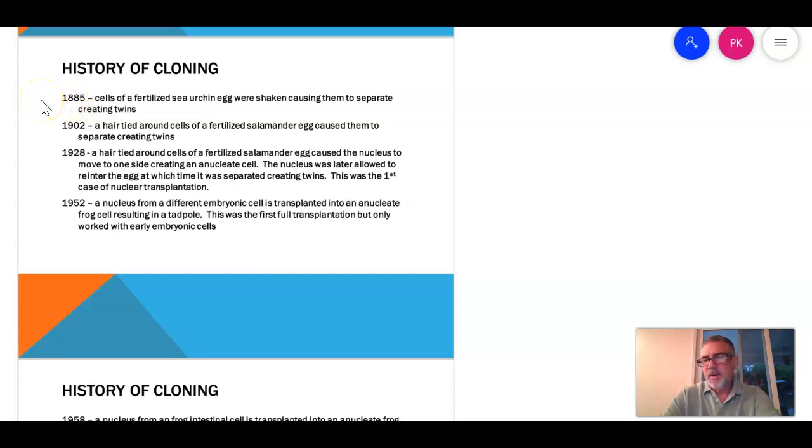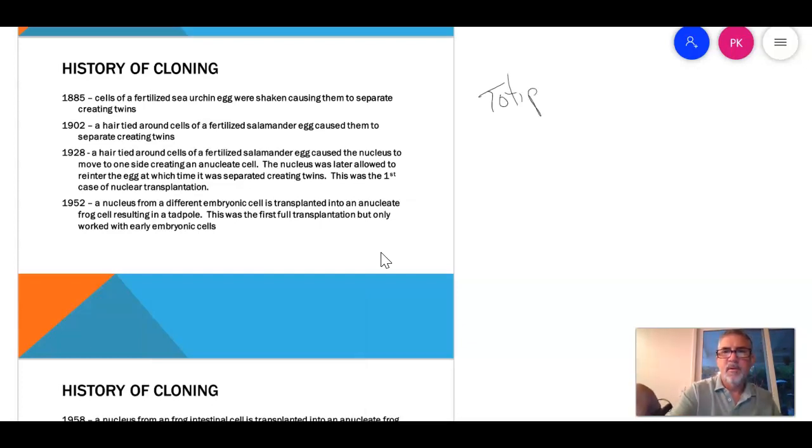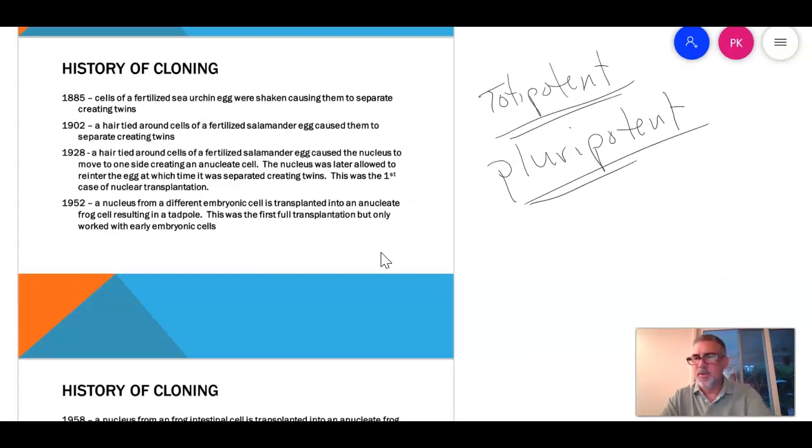But really, since 1885, we've been trying to figure out how to manipulate embryonic cells. In 1885, sea urchin cells were shaken. Sea urchins can have parts taken off and they'll grow into full organisms, so they're full of stem cells. They showed that they could create urchins from separating urchin cells.